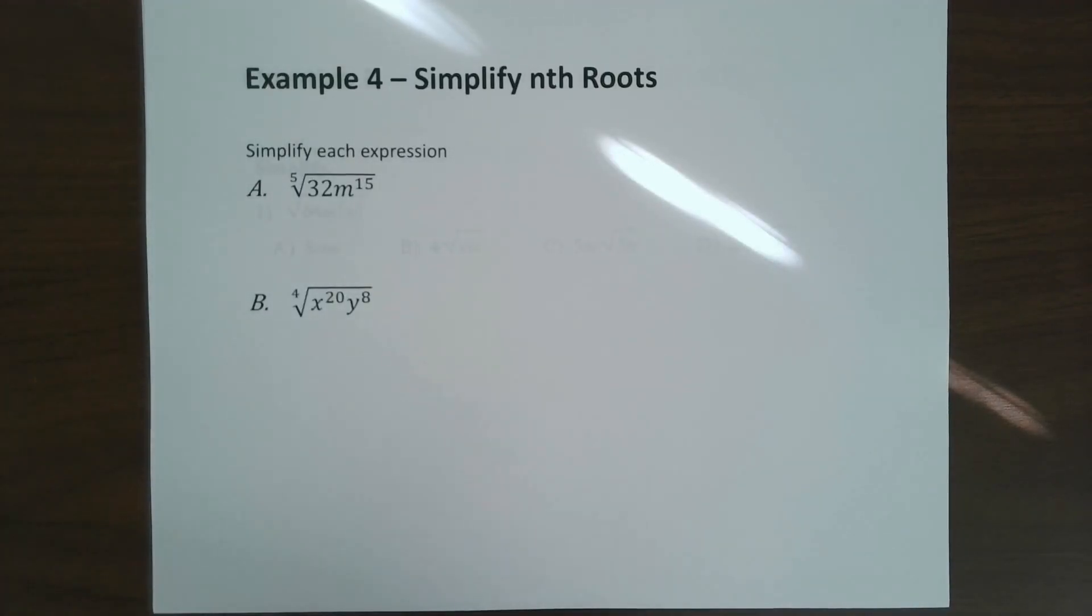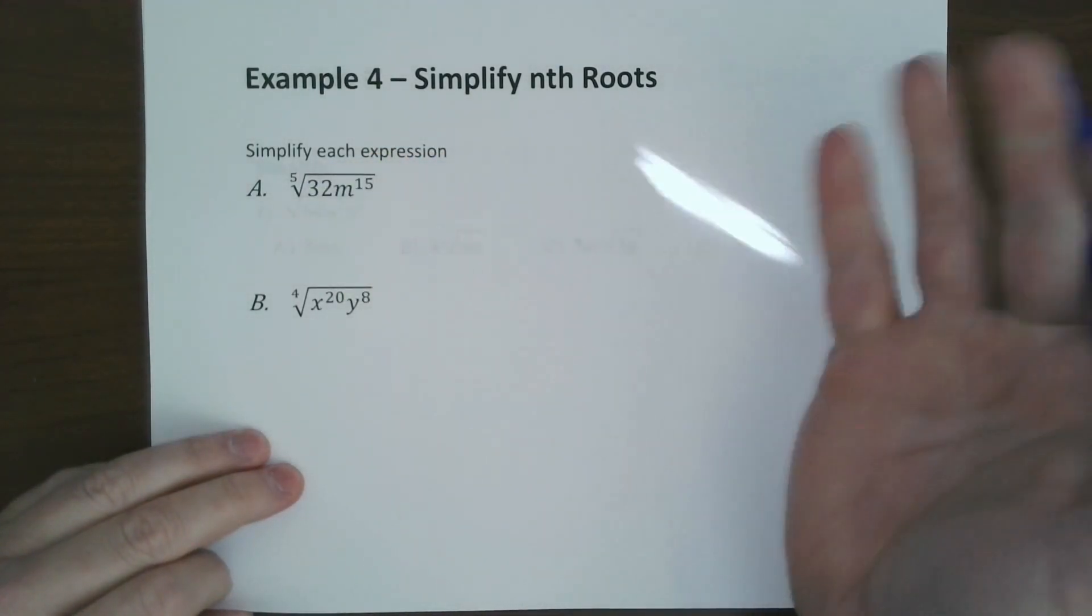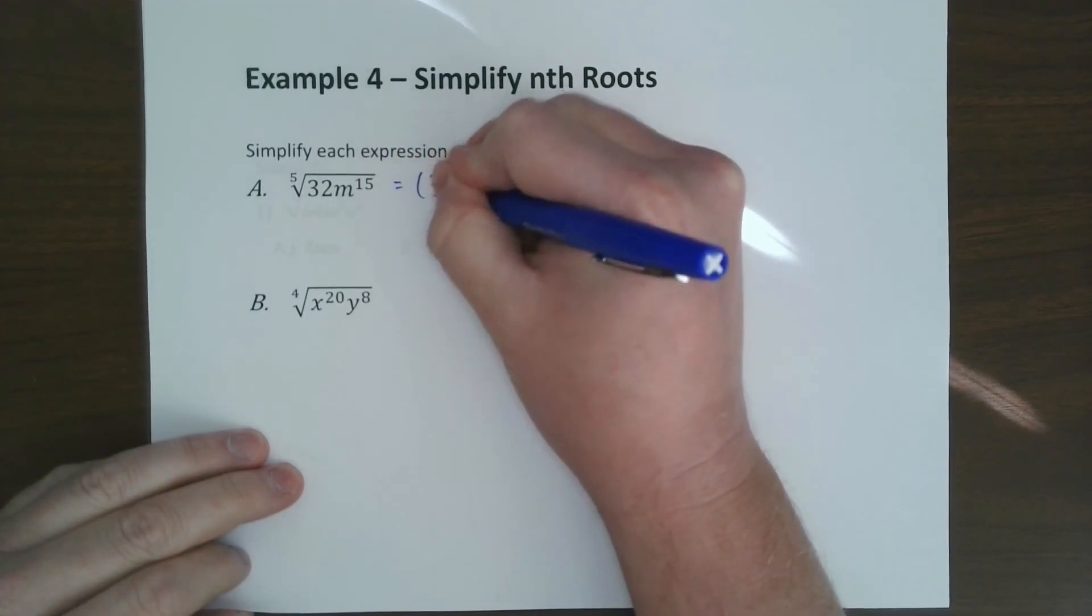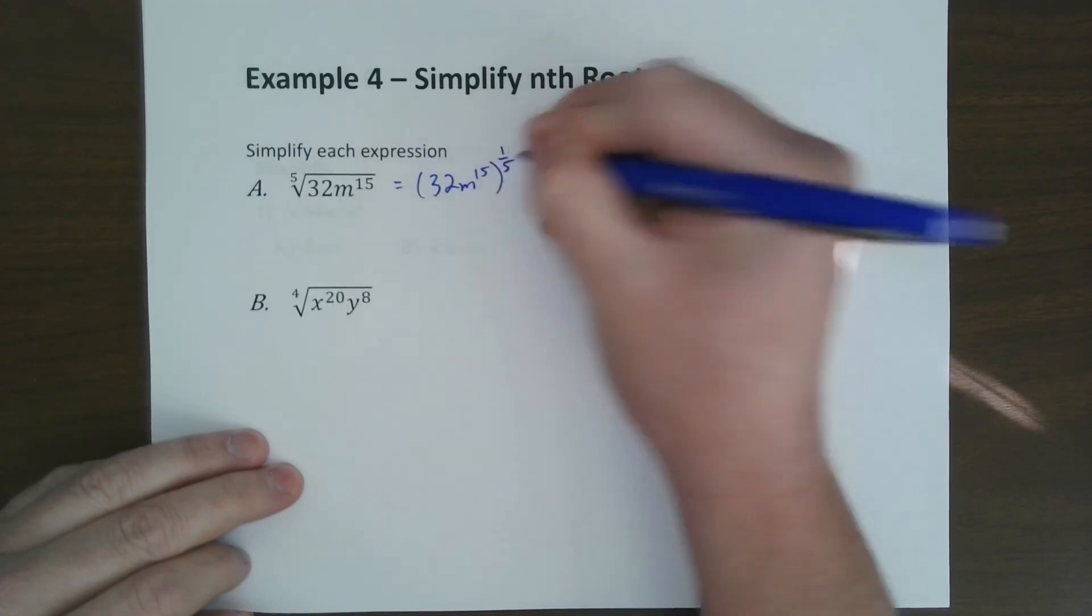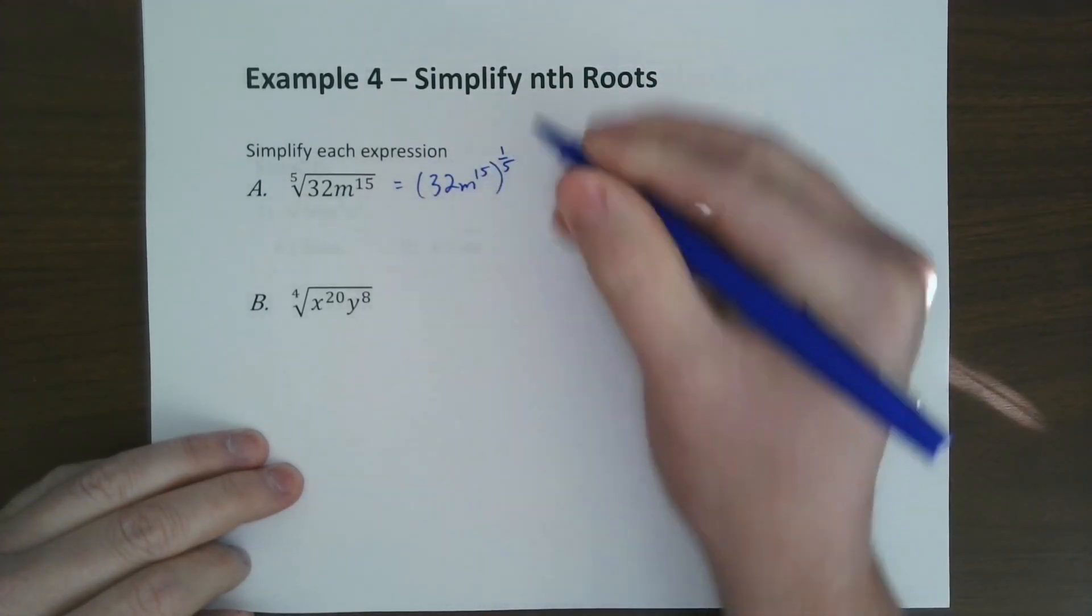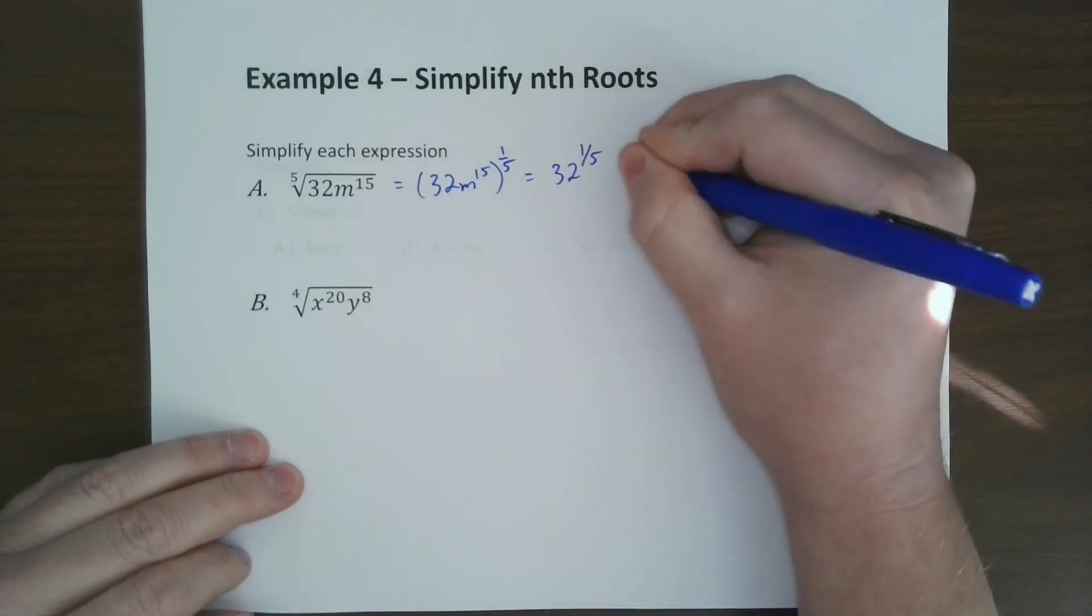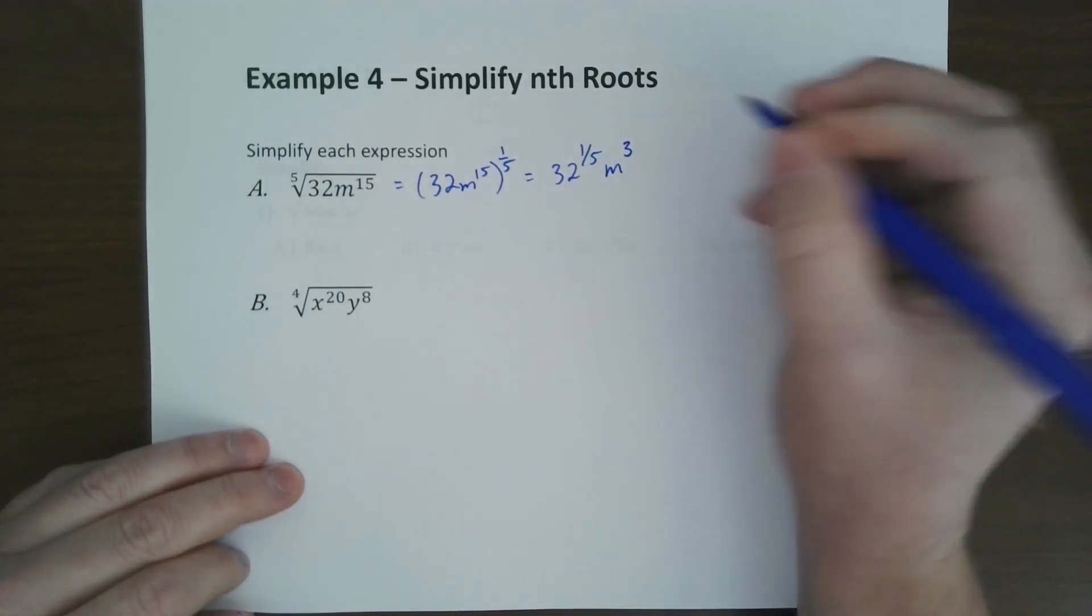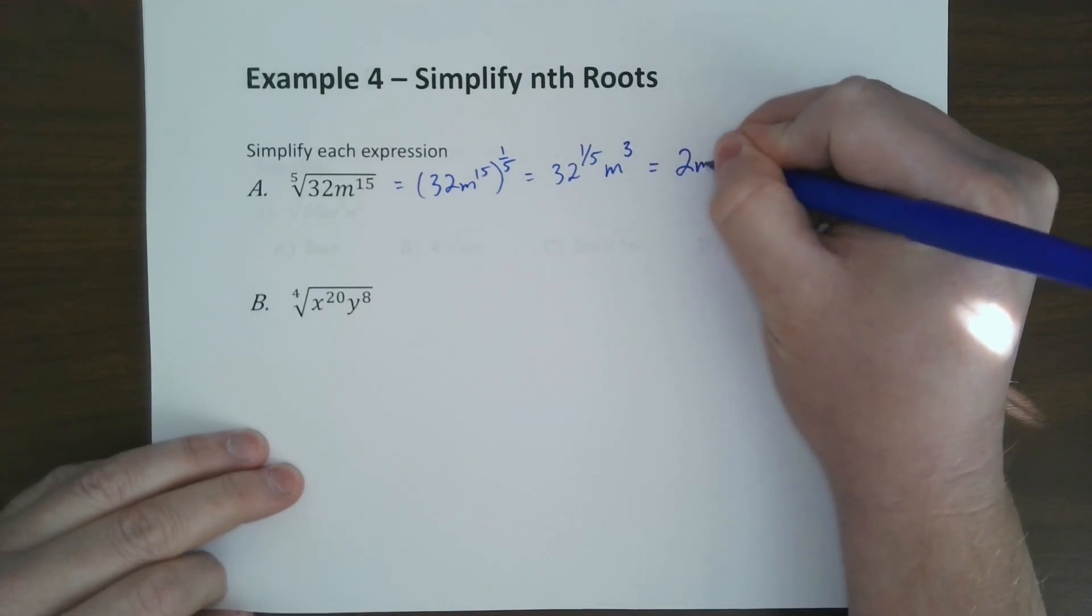When we're talking about simplifying these radical expressions with nth roots, we're going to do the one-fifth for everything. We're going to rewrite this as 32m to the 15th to the one-fifth. Now we're going to distribute the one-fifth to every exponent. We have 32 to the one-fifth, and then we have one-fifth of 15, which is 3. 32 to the one-fifth is just 2, so you end up with 2m cubed.